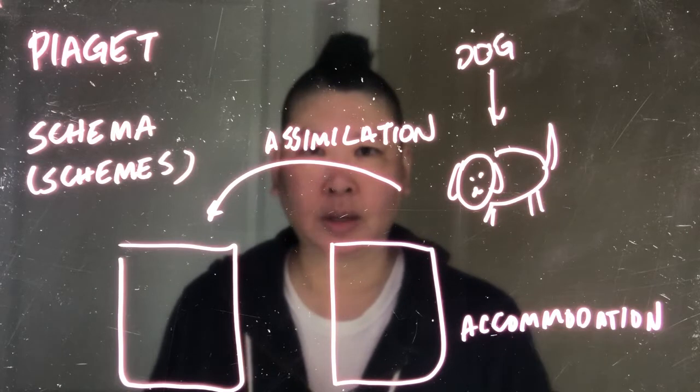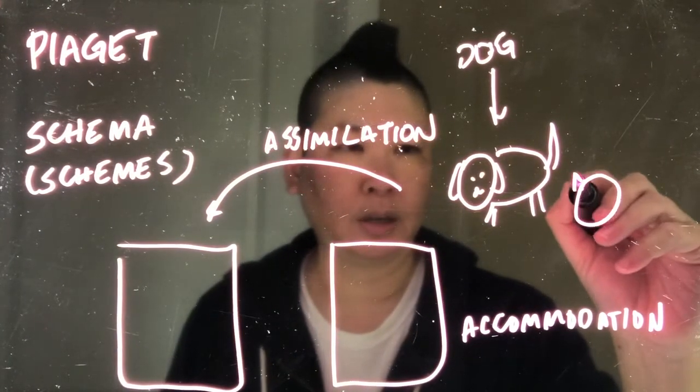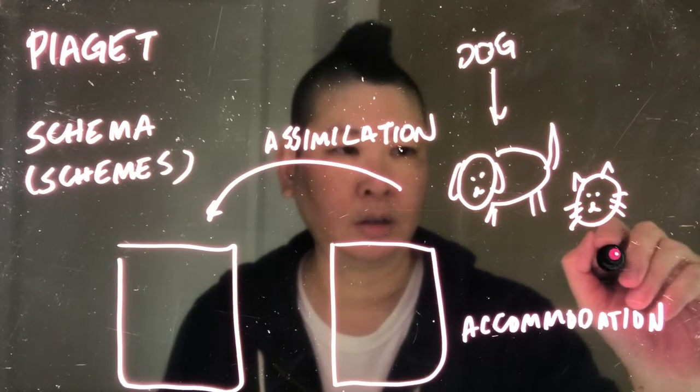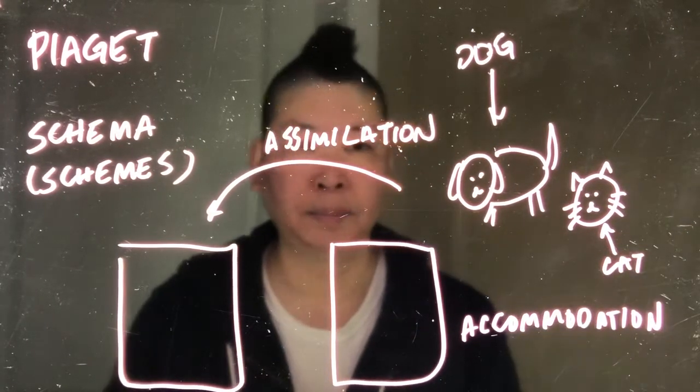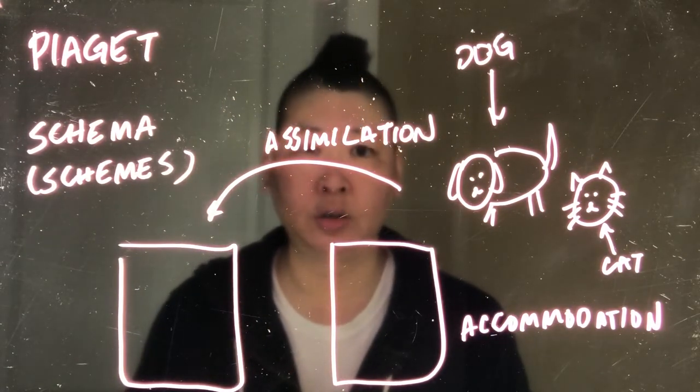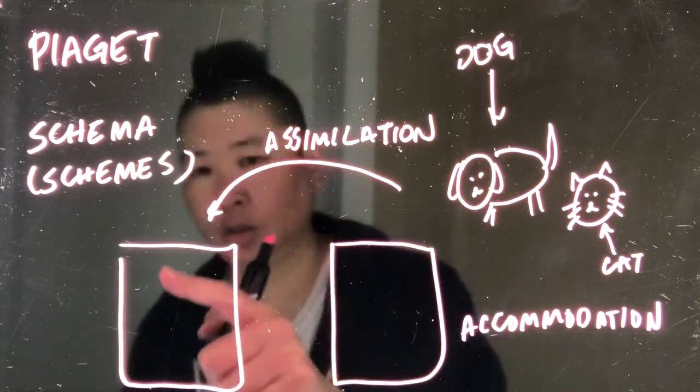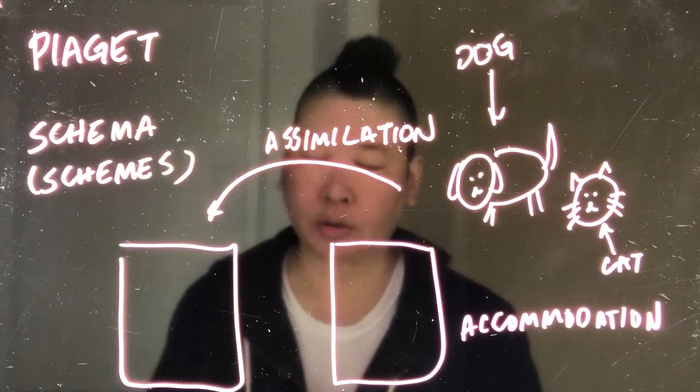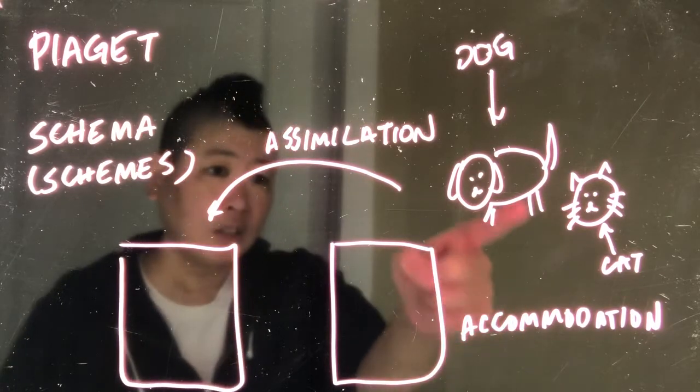Now let's say you encounter some new information or another type of four-legged furry animal with a tail, for example, this. This is supposed to be a cat. What are you going to do? Well, you might try to use assimilation to put this new information, a cat, into an existing schema of a dog. So it might look something like this. You see the cat and you point at it and you say, that's a dog.